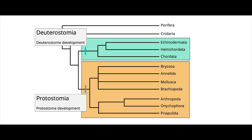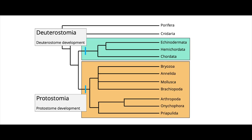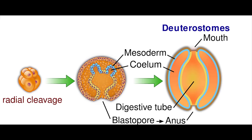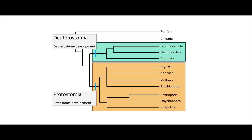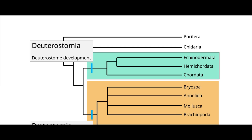All living things share a common ancestor after all. We belong to the Superphylum Deuterostomia, defined as all organisms that develop their anus before their mouth during embryonic development. Under this definition, that includes chordates, hemichordates, echinoderms, and a few mysterious groups of now-extinct animals. That's a lot of critters.